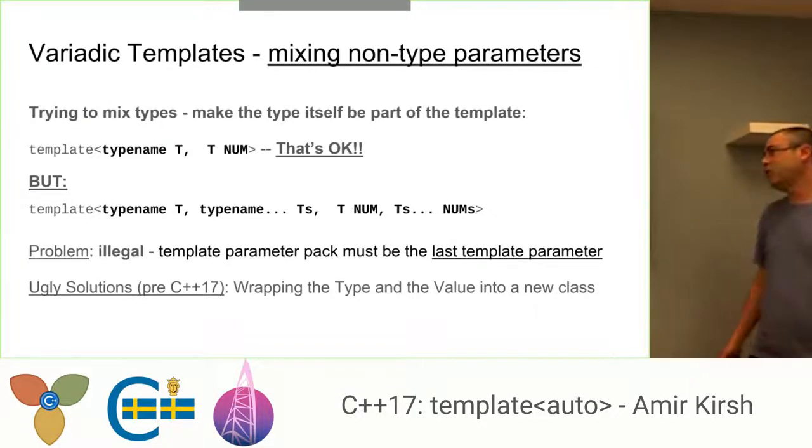Now there is a solution before C++17, and the solution is to wrap up the type and the value. It's ugly. We are looking for something else. And we remember that we want to stick auto somewhere. So let's think what can we do. And C++17 brought the following solution.